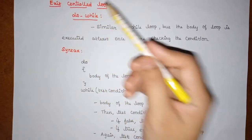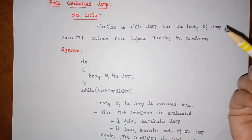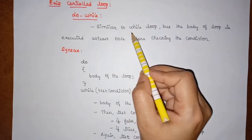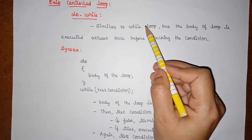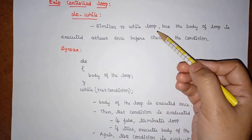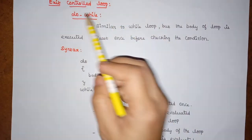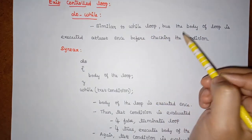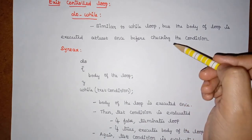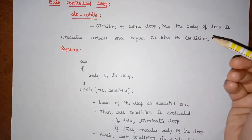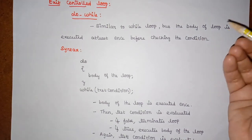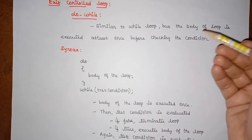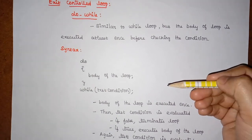Do-while is similar to the while loop seen in the previous class. The difference between while and do-while is: in while, the condition is checked first — if true the loop executes, if false it terminates. But in do-while, the body of the loop gets executed at least one time before checking the condition. After executing the body, the condition is checked — if true the loop executes again, if false it terminates.